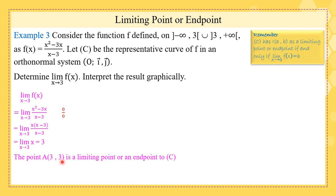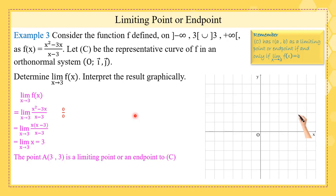So the limit as x tends to 3 is 3, and the point A with coordinates (3, 3) is a limiting point or an end point to C. Graphically, the point (3, 3) is an open point — not on the curve. The representative curve is in fact a straight line y equals x, but the curve is the whole line y equals x except the point (3, 3), which is an open point.